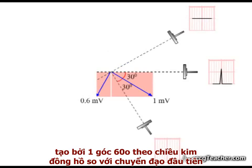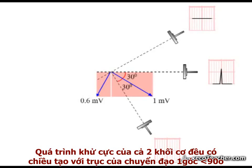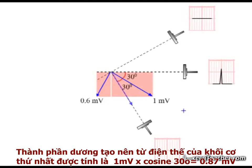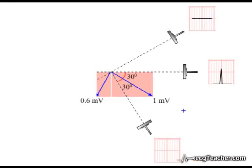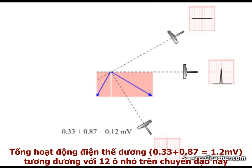In a third lead, positioned 60 degrees clockwise from lead A, these events produce a deflection with a very different morphology. Depolarization of both segments is travelling within 90 degrees of the lead. The positive contribution from the larger section is 1 millivolt multiplied by the cosine of 30 degrees, or 0.87 millivolts, while the smaller section generates a positive voltage of 0.6 multiplied by the cosine of 57 degrees, or 0.33 millivolts. This gives a total positive deflection of 12 small squares in the readout from this lead.